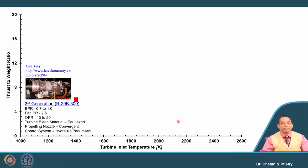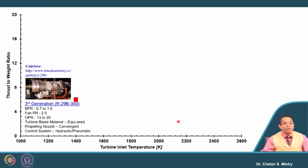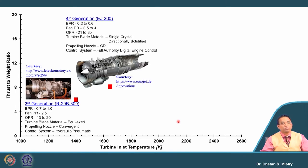If we look carefully, the bypass ratio for the third generation engine was around 0.7 to 1. Fan pressure ratio is approximately 2.5. Overall pressure ratio is slightly on the lower side, say 13 to 20. Turbine blade material in those days was equiaxed. The propelling nozzle is mainly a convergent nozzle, and control systems are hydraulic and pneumatic. So this is what is called a third generation aero engine.